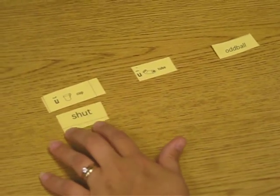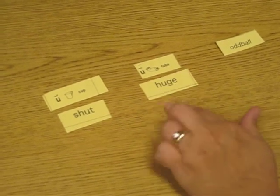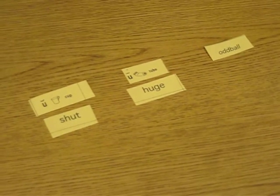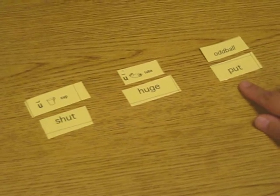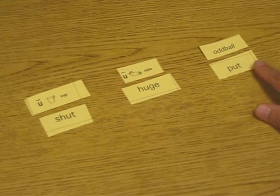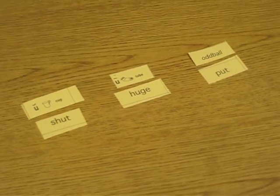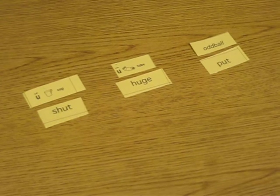So in the short vowel we have shut. Here's an example of our long vowel: huge. And then we have put as an oddball. Put looks like it should be put, but it's not, so we have that in the oddball section. Go ahead and pause the video and see if you can sort your words, and then when you're finished, unpause the video so you can see if you were correct.